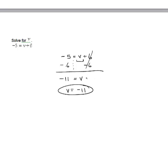And if you notice, it doesn't matter what side I put the variable on as long as I get it by itself. Again, let's check. I have negative 5. Does that equal v, which is negative 11? So it's negative 11 plus 6. Sure enough, if I have negative 11 and add 6 to it, I get negative 5, which equals negative 5. So it checks.